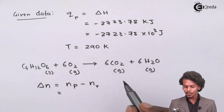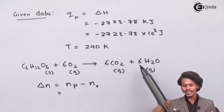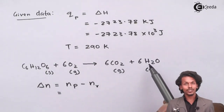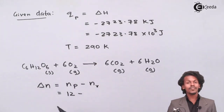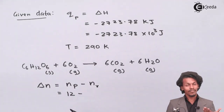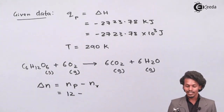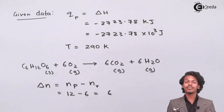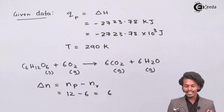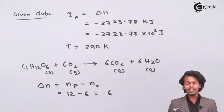In this case, there are 6 moles of CO2 gas and 6 moles of H2O gas on the product side, combining to make 12 moles. The only gaseous reactant is oxygen, which contributes 6 moles. Therefore, delta N = 12 − 6 = 6.